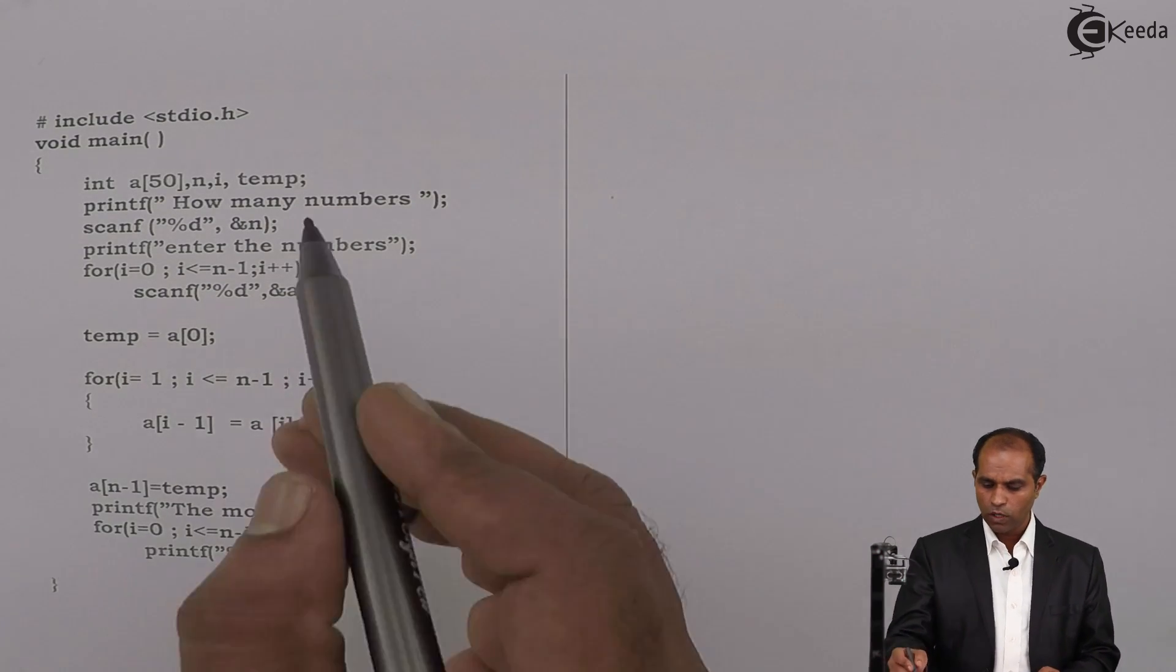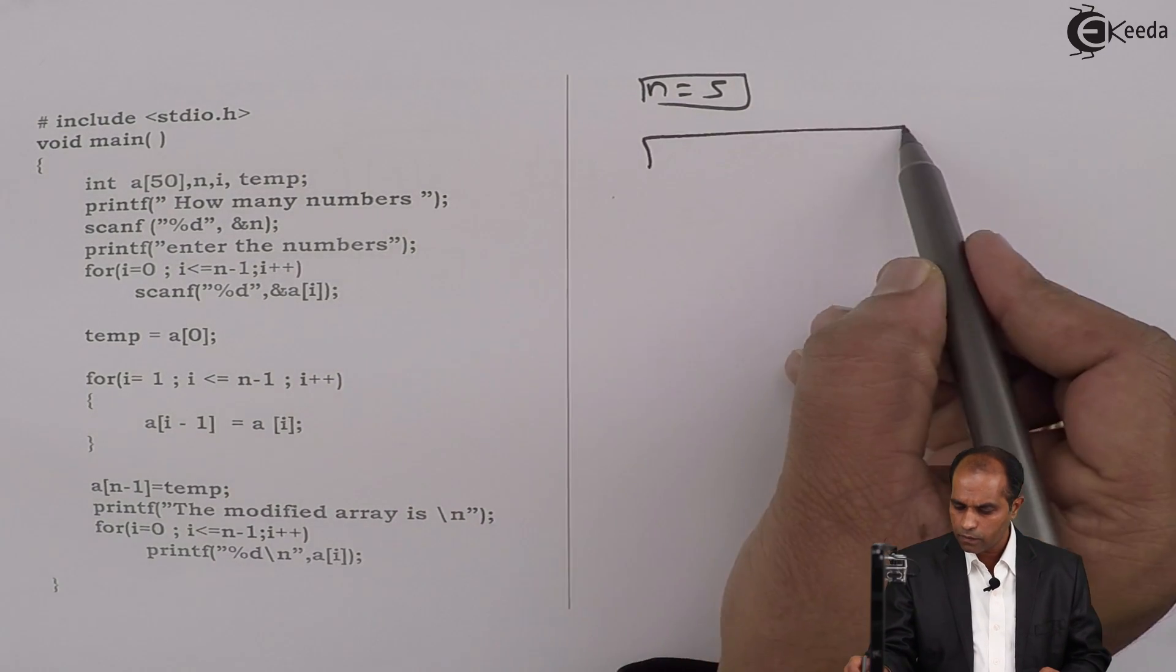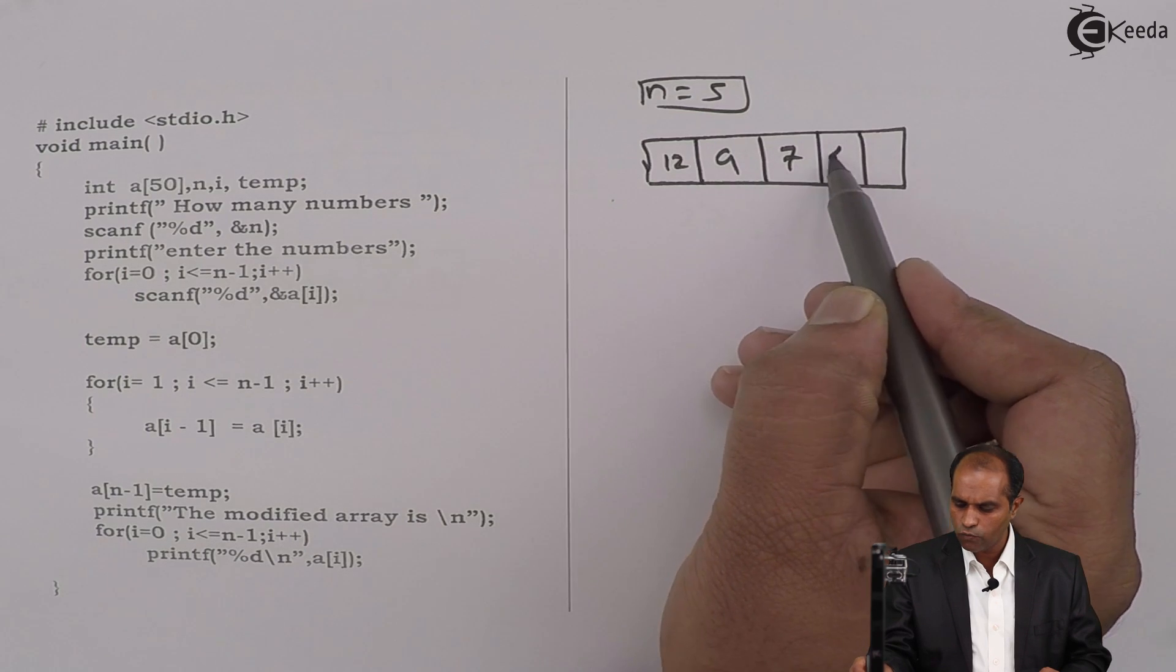The concepts we just spoke, assume numbers n as say 5. Read the numbers 12, 9, 7, 4, say 8.